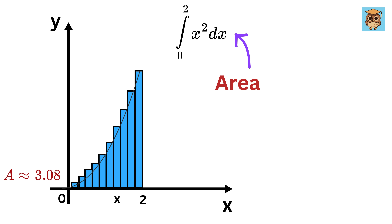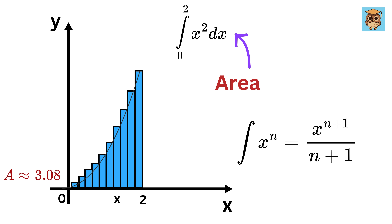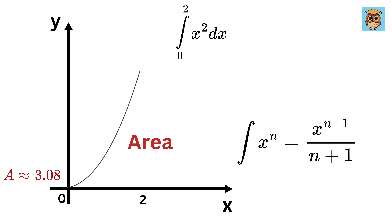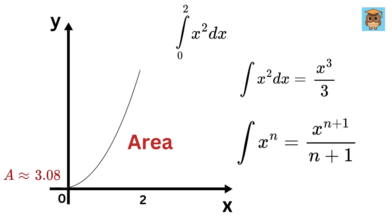Without going into much technical detail, the formula for integration of X to the power of N is given as X raised to N plus 1, divided by N plus 1. Now let us use it to calculate the actual area of the parabola. The value of the integral of X squared DX will be X raised to 2 plus 1 over 2 plus 1, or X cubed over 3.